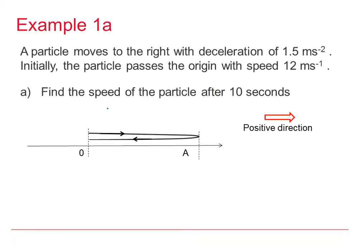Here we have a particle moving to the right with a deceleration of 1.5 metres per second squared. Initially, the particle passes the origin with a speed of 12 metres per second, and we need to find the speed of the particle after 10 seconds. Since the particle is decelerating, it must slow down and eventually turn round. Annotating the diagram: initial speed 12 m/s with a single-headed arrow, and a forward double-headed arrow labelled minus 1.5 metres per second squared for the deceleration. I'm going to take to the right as my positive direction.